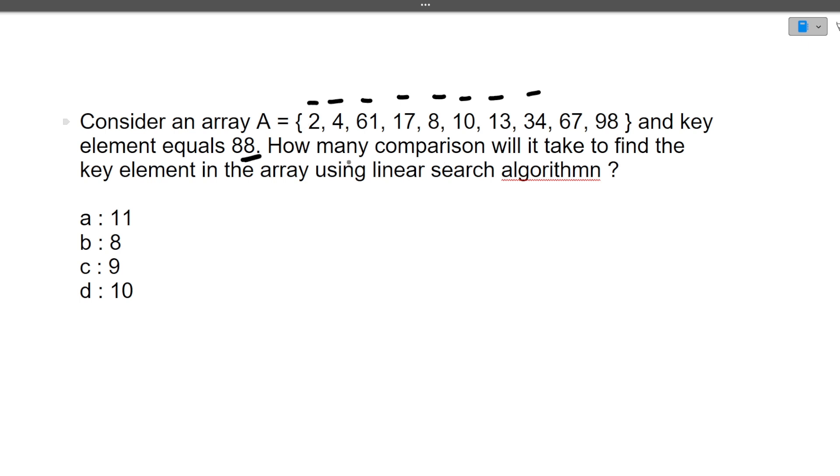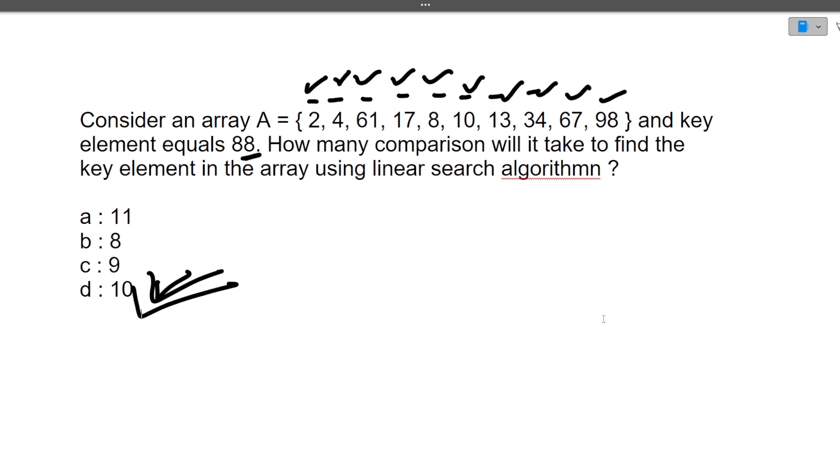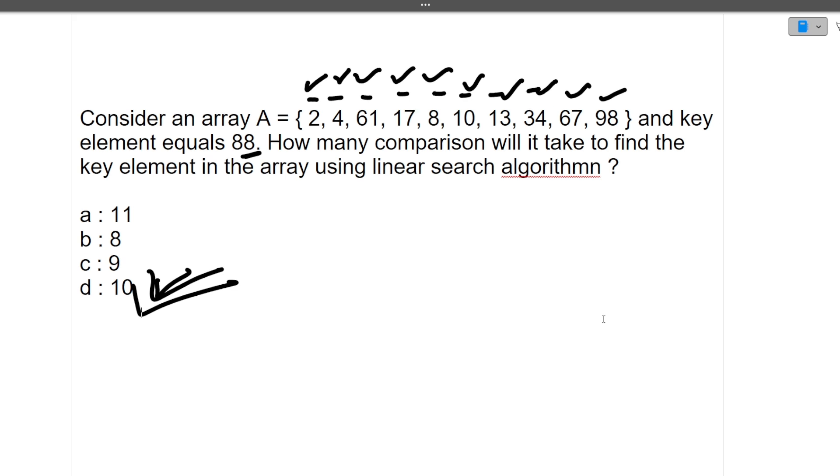So now we have to find 88. Now this 88, we will be traversing over this array and with every element we will be comparing it. So we will first compare it with 2, then 4, then 61, then 17, then 8, then 10, then 13, 34, 67, 98. So in this we have not found any element that is equivalent to 88. So how many comparison happened? So total length of the array is 10, so 10 elements we have made comparison with. So answer here is 10. So I hope now this question is also clear to you.